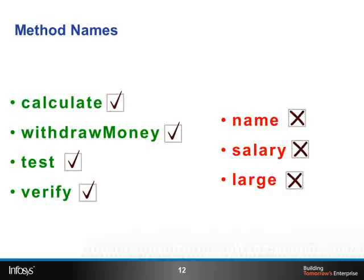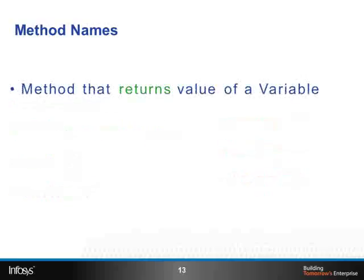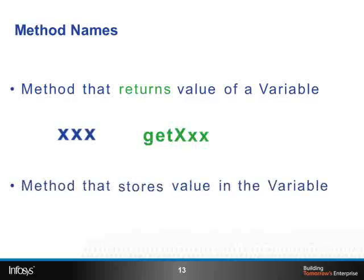There is naming convention for a method that returns the value of a variable. If the name of the variable is xxx, the name of the method is getxxx. Similarly, the name of the method that stores value in the variable will be named setxxx.